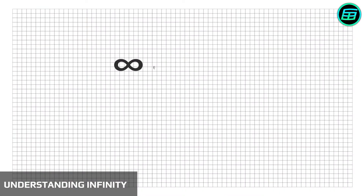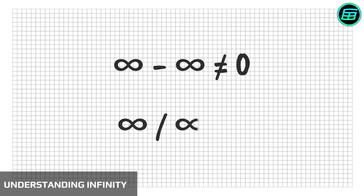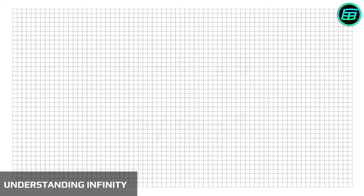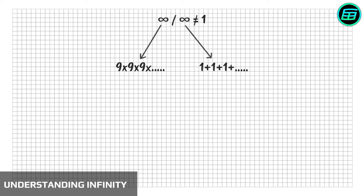Why is infinity minus infinity not equal to zero? And infinity over infinity not equal to one? This is because we can't treat infinity as an ordinary number, and we can't say that two infinities are the same. Maybe the first infinities represent 9 times 9 times 9 and so on forever, and the second infinities represent 1 plus 1 plus 1 and so on forever.